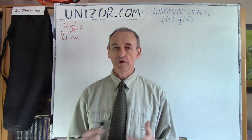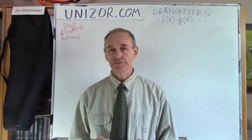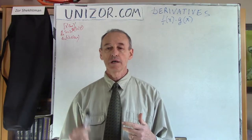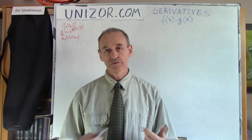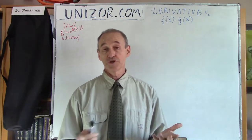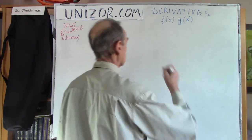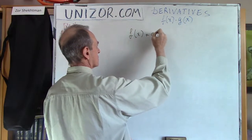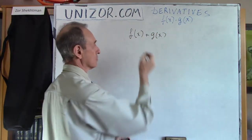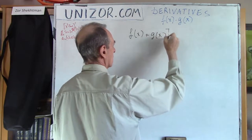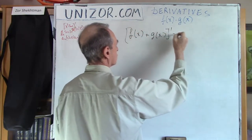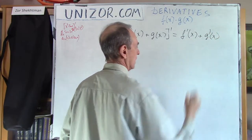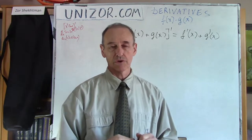In the previous lecture, we learned that the derivative of the linear combination of two functions is a linear combination of derivatives. In particular, if you have a sum of two functions — which is also a linear combination with coefficients one — the derivative of a sum is equal to the sum of derivatives.